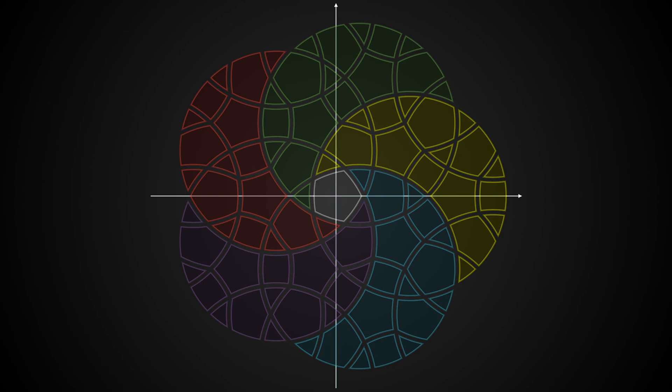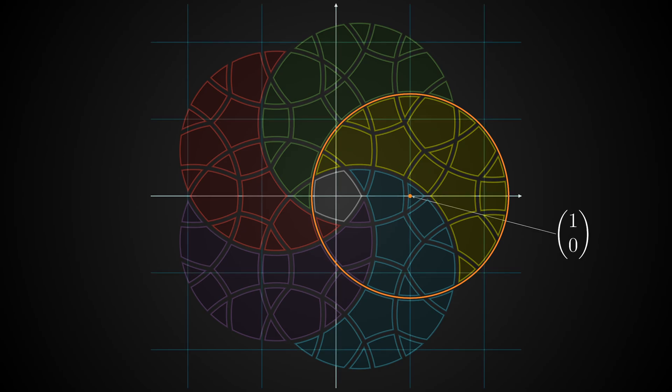Well, the right circle could be centered at (1,0). The other circles are then rotations by 72 degrees around the origin.